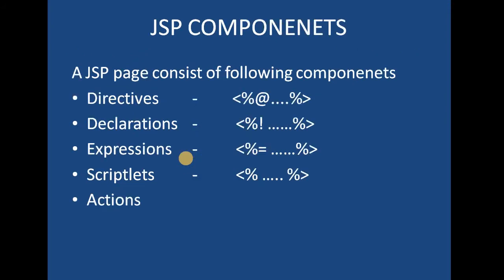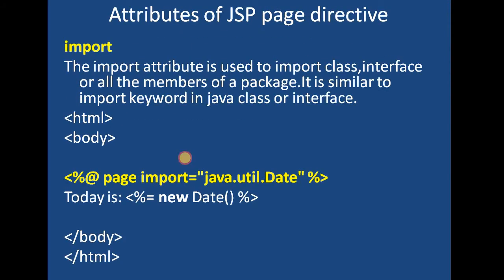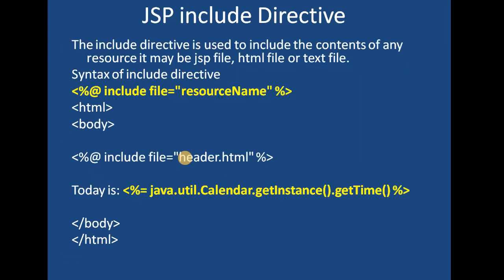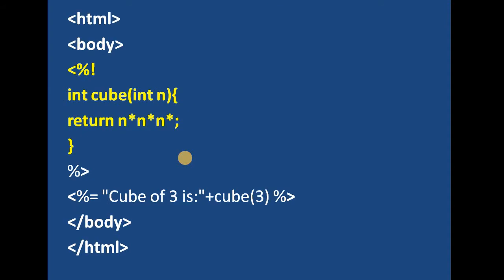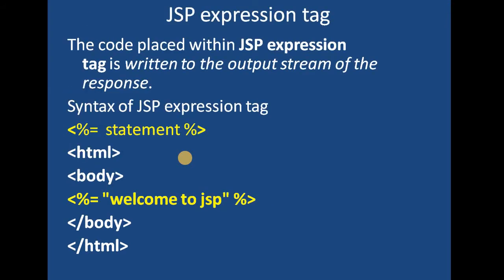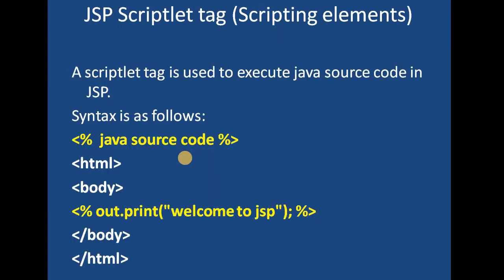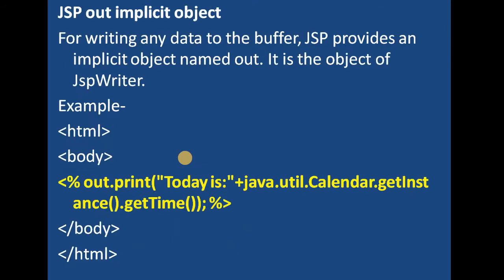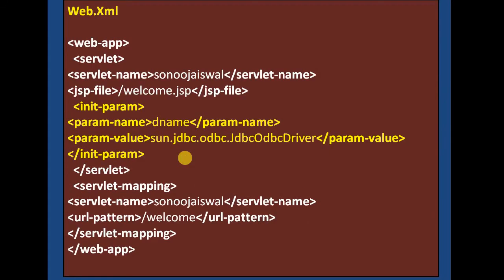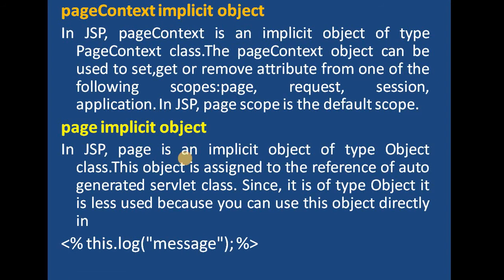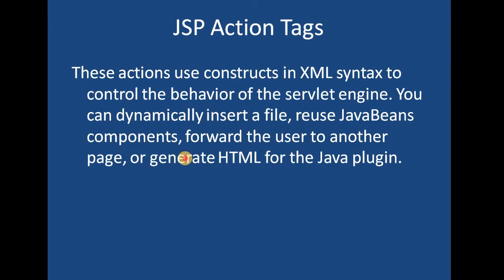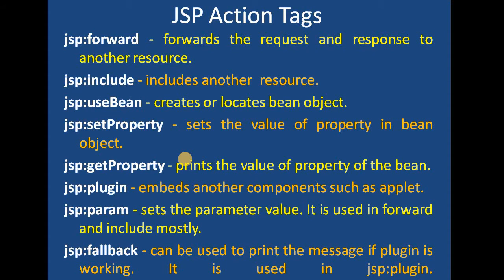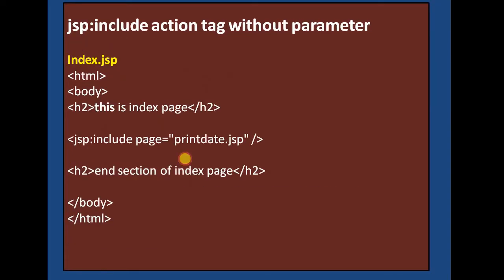We had seen the JSP syntax and JSP components, which included JSP directives, different types of JSP directives, attributes of the JSP page directives, JSP include directive, taglib, and declaration tags. We had seen examples of the JSP expression tag, scripted tags, JSP implicit objects, different objects, content object, and JSP action tags like forward tag, include tag, and bean tag.